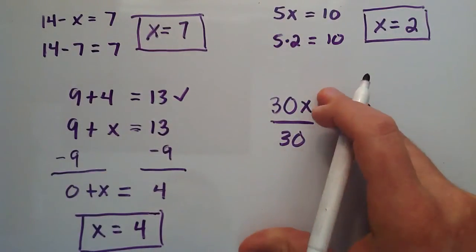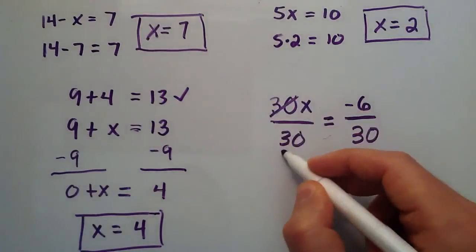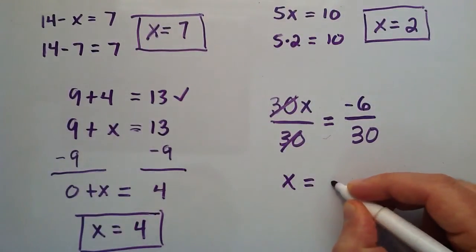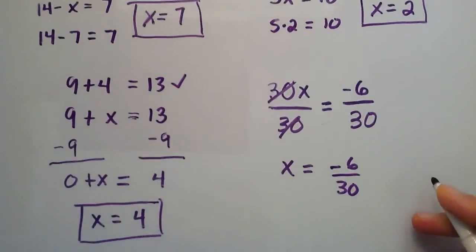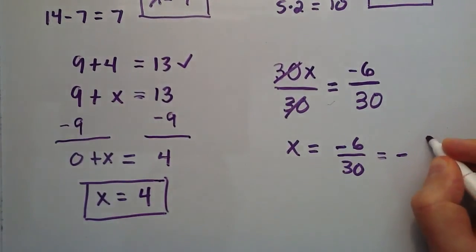And we'll just go ahead and put our equal sign down here now. So, 30 over 30 cancels here. Now we're left with x is equal to negative 6 over 30. And we can simply move this negative sign out front. So, x is equal to negative 6 over 30 here.